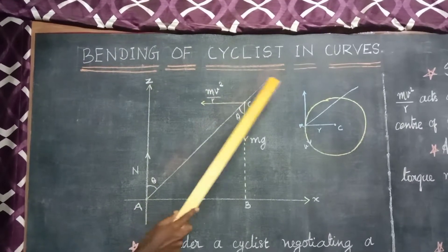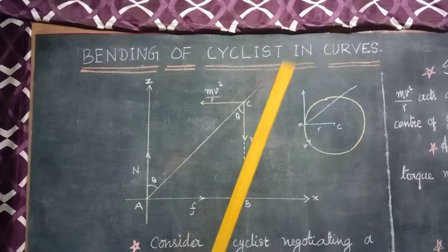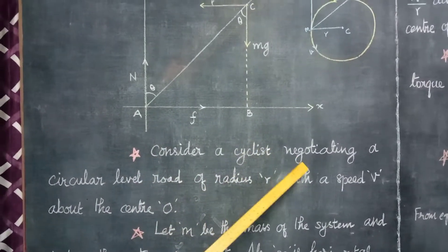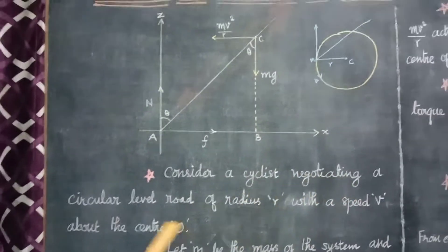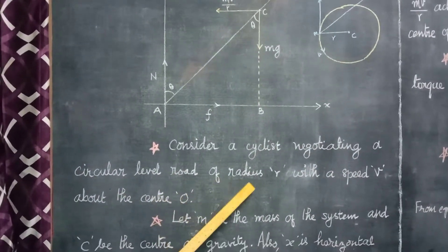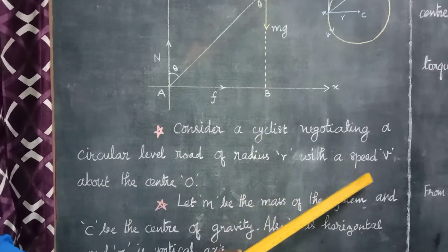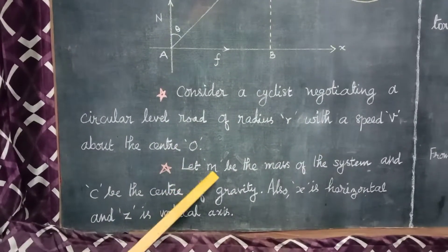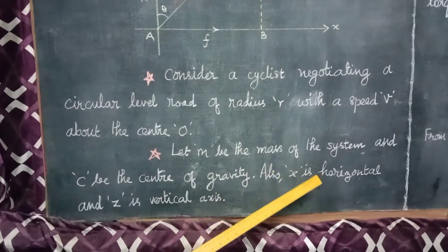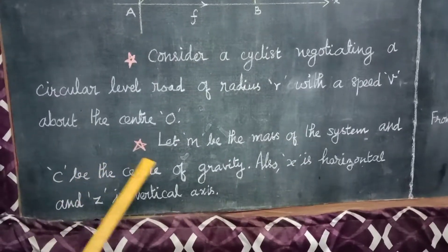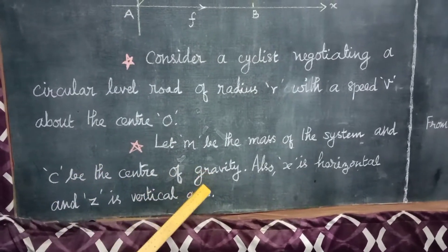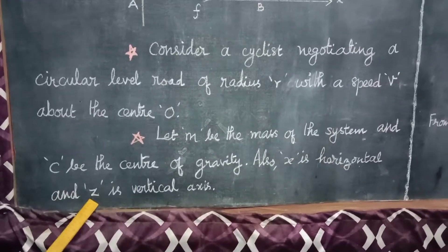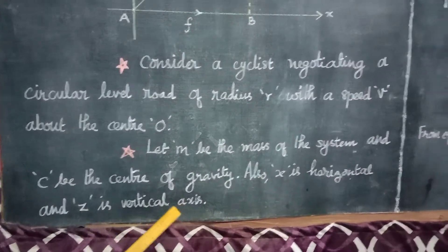Bending of cyclists in curves. Consider a cyclist negotiating a circular level road of radius R with a speed V about the center O. Let M be the mass of the system and C be the center of gravity. X is the horizontal and Z is the vertical axis.